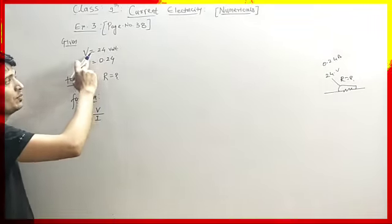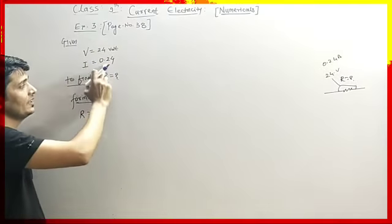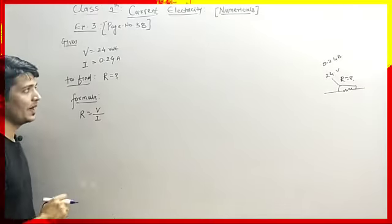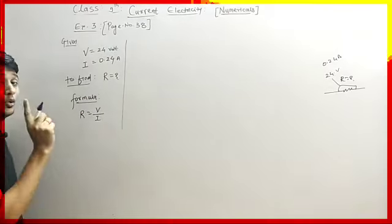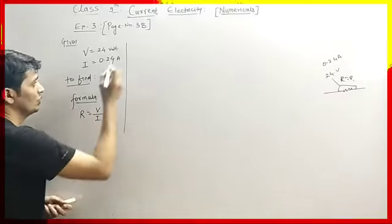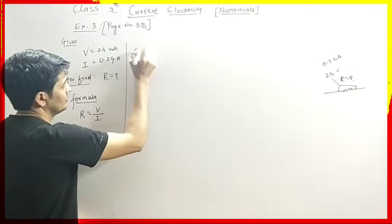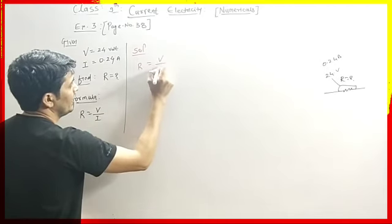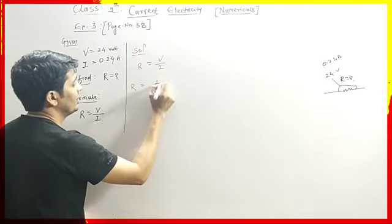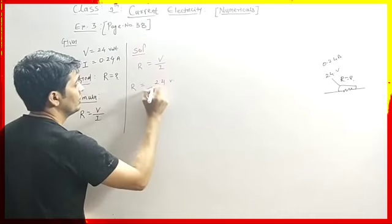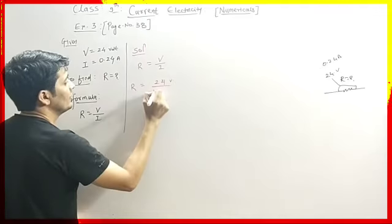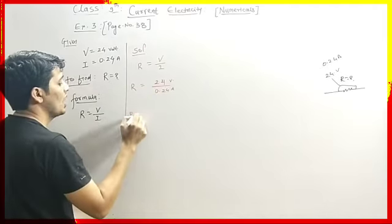We have to find the resistance, and the formula is R equals V divided by I, according to Ohm's law. So the formula is R = V/I. R equals — what is V? V is 24 volt. It is 24 volt divided by the current. Current is 0.24 ampere. So R equals...